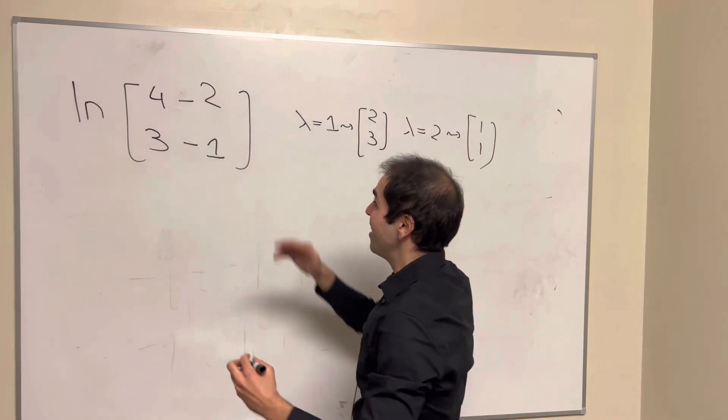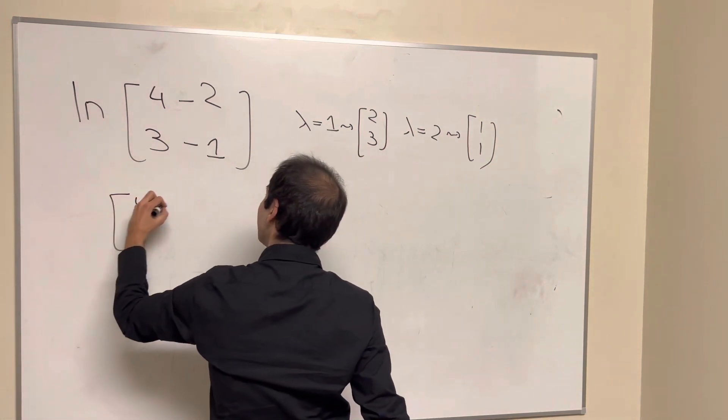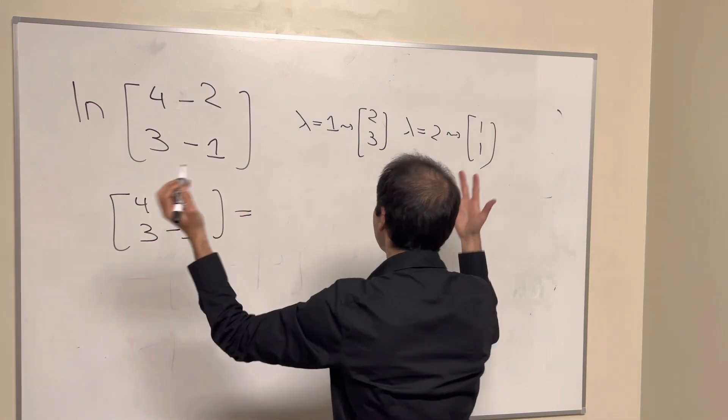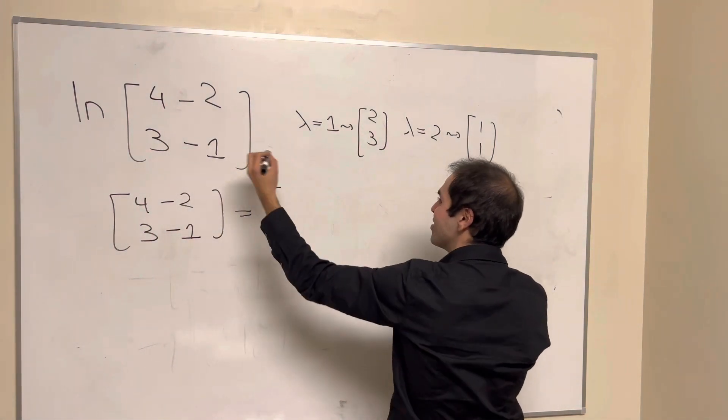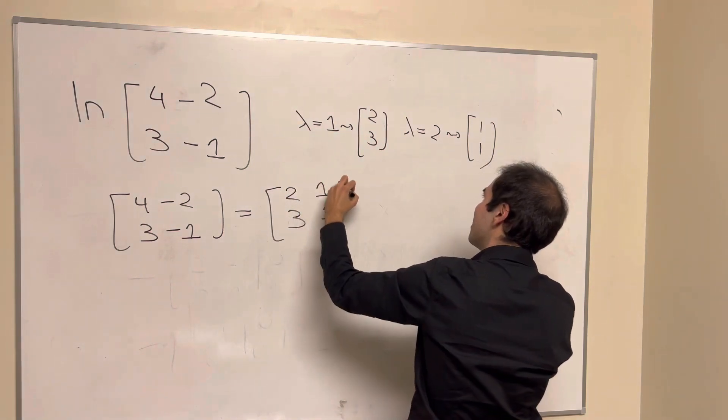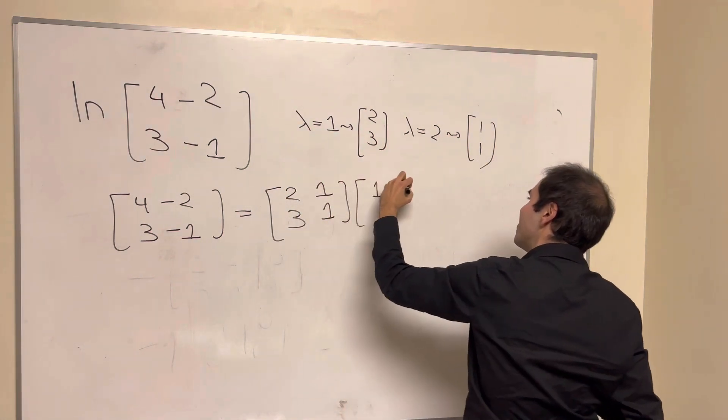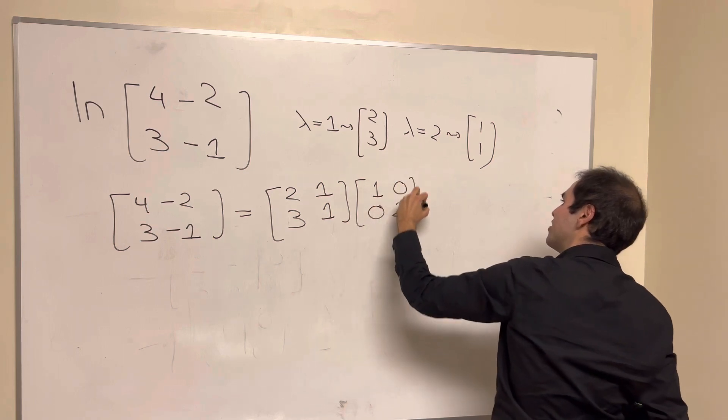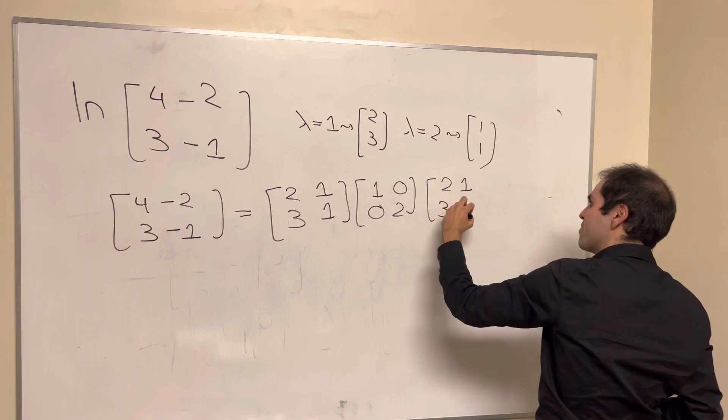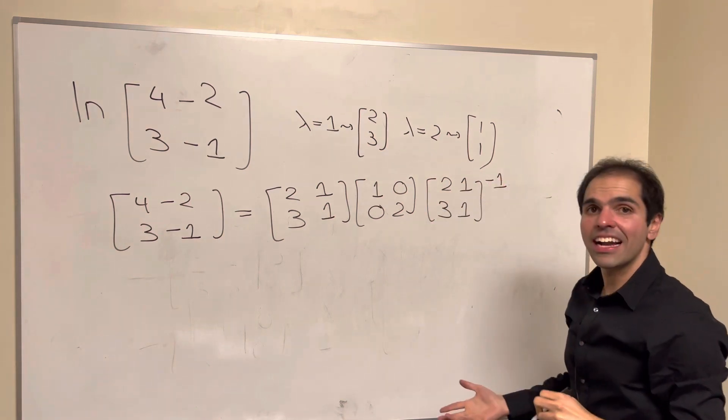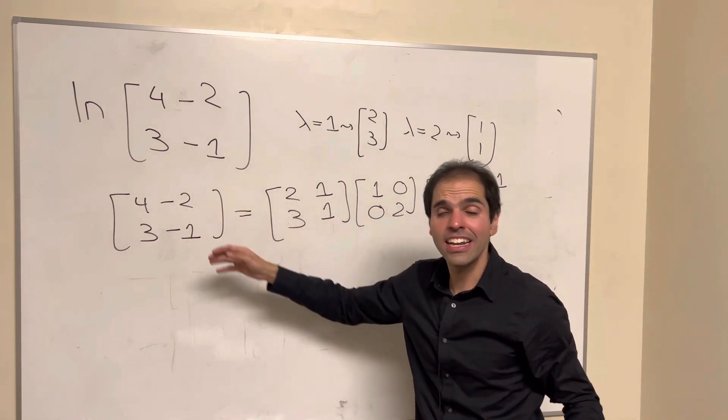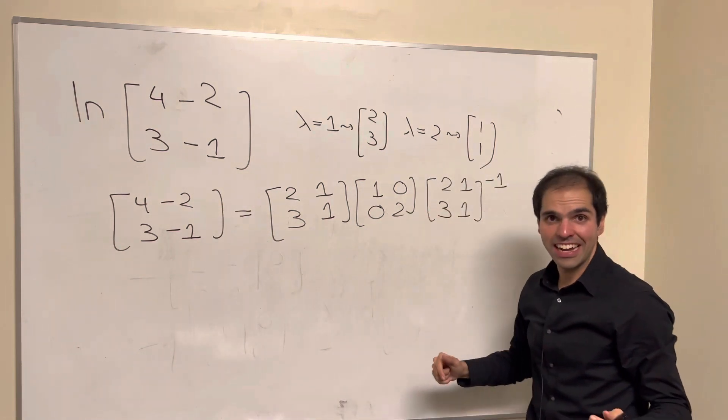So what does that tell you? It tells you that 4 minus 2, 3 minus 1 can be put into a diagonal matrix, so this equals the eigenvectors 2, 3, 1, 1 times matrix of eigenvalues 1, 0, 0, 2 times matrix of eigenvectors inverse. So again, this is called diagonalization, which is a useful tool of converting a non-diagonal matrix into a diagonal one.